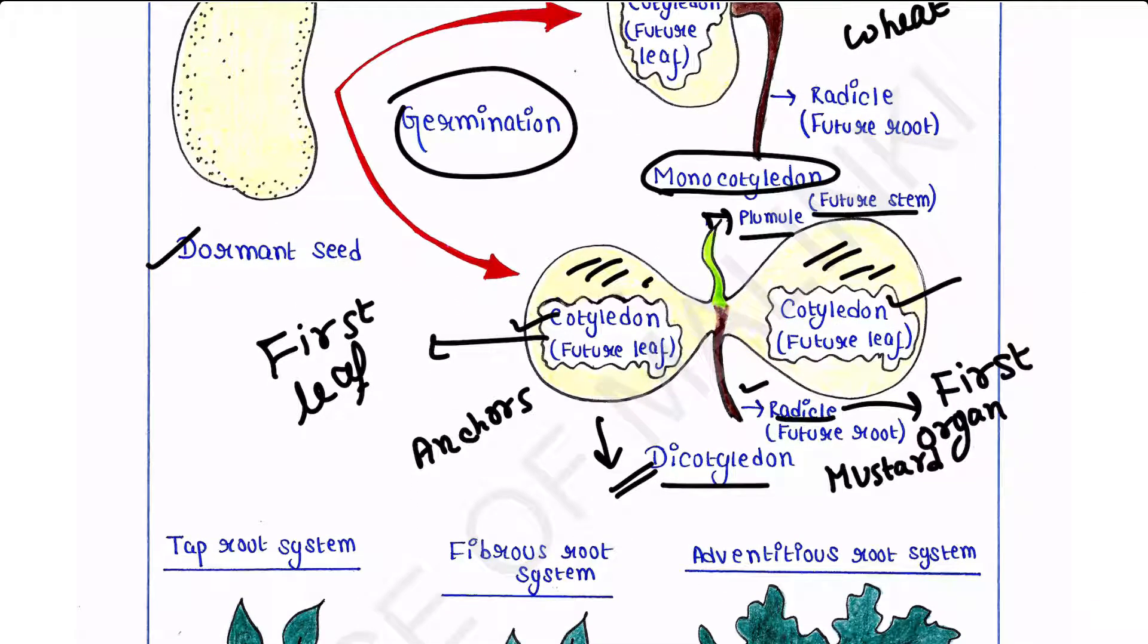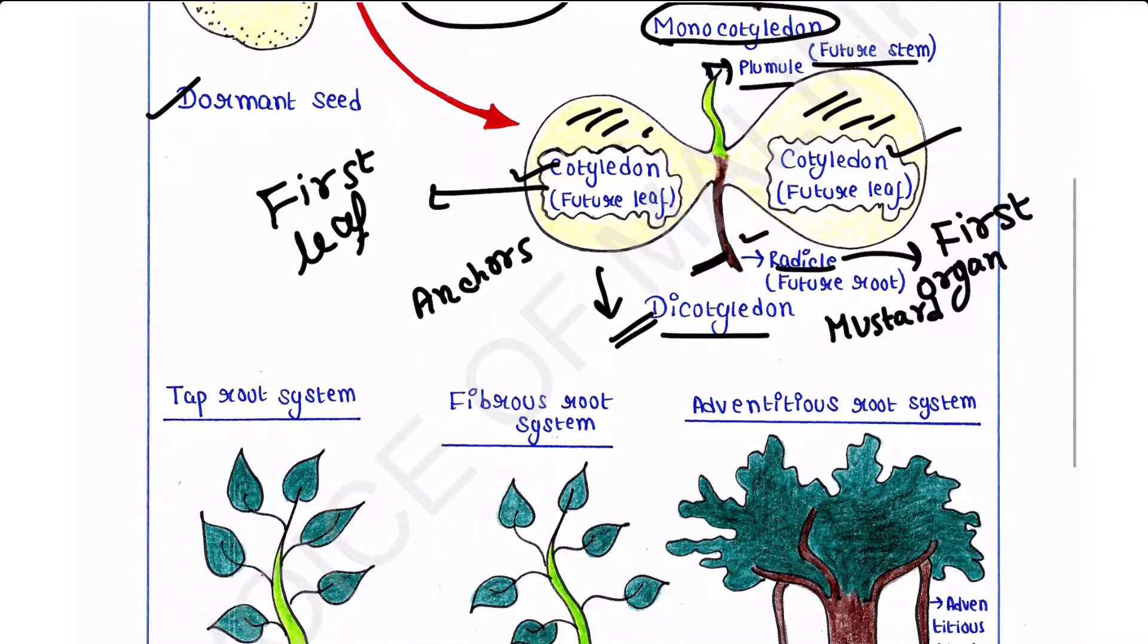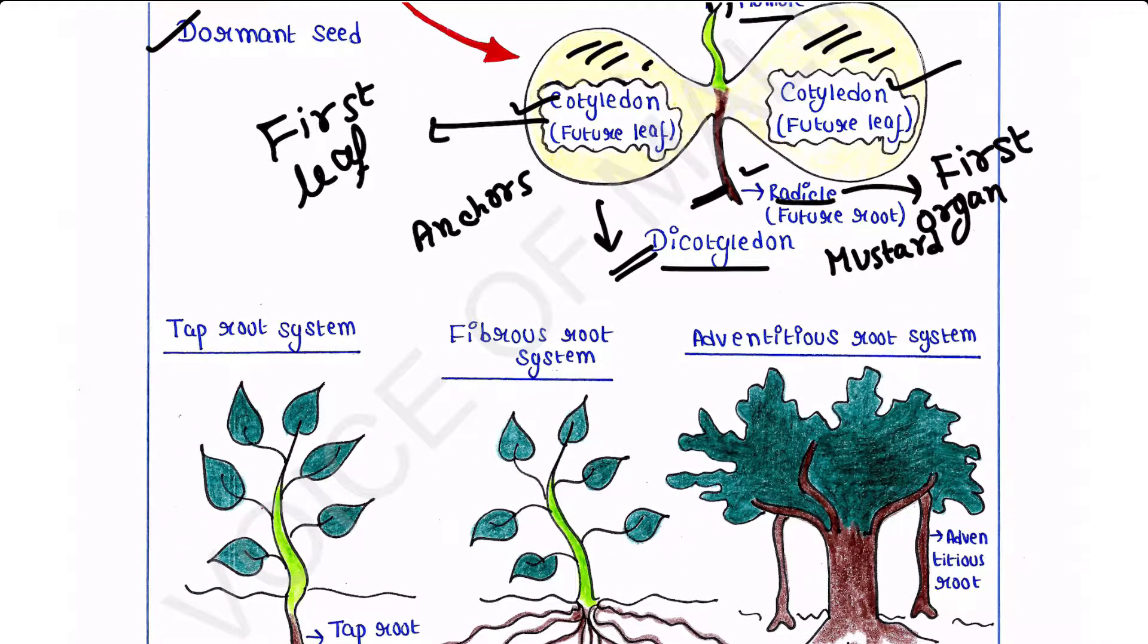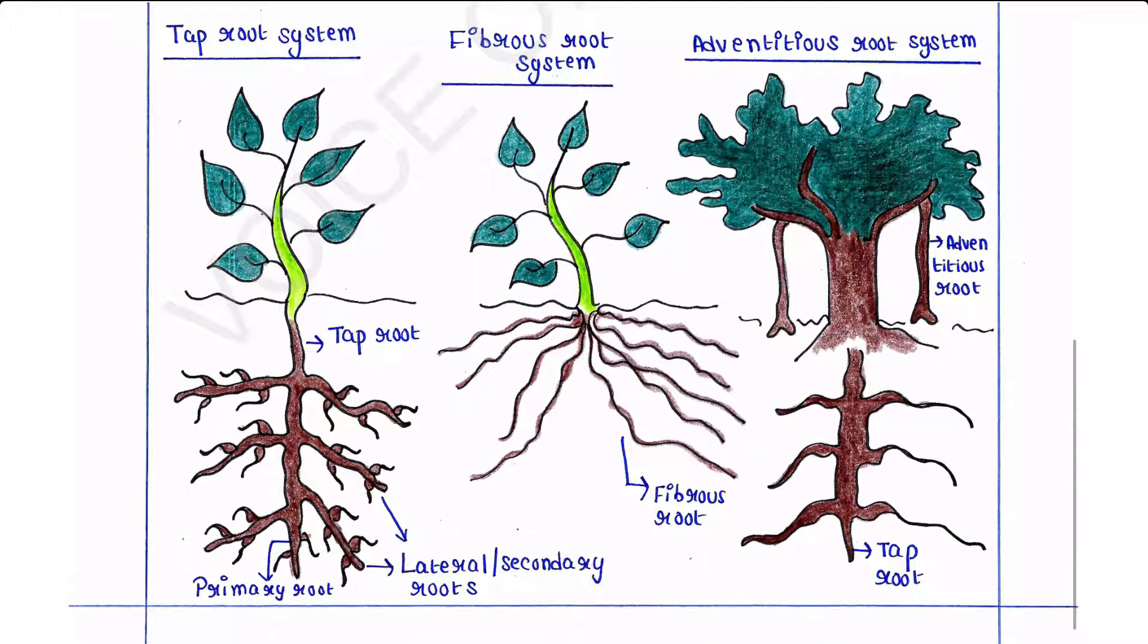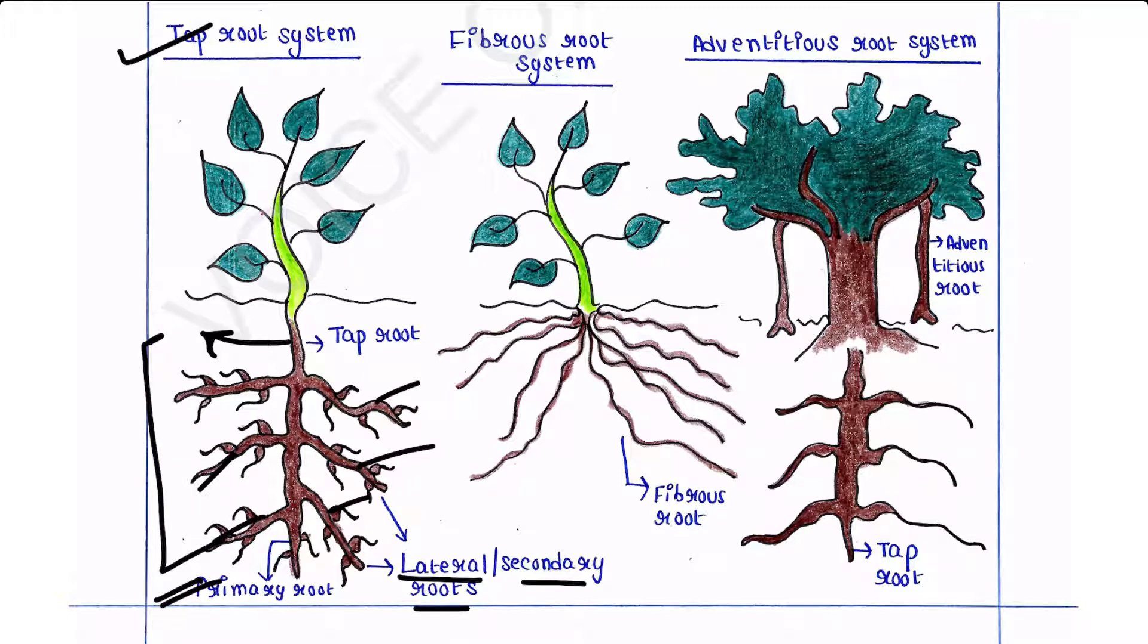So elongation of this radicle leads to the formation of primary root. This is the primary root, this is the branch of radicle, and it grows inside the soil. Primary root bears branches like these, these are different branches which are coming from the primary root. They are called lateral or secondary roots. Now the primary roots and its branches constitute the tap root system.